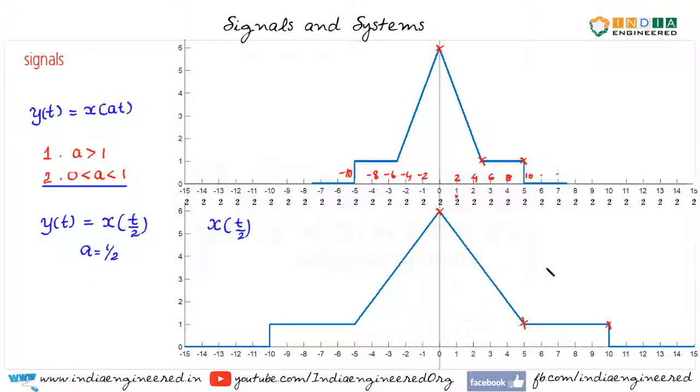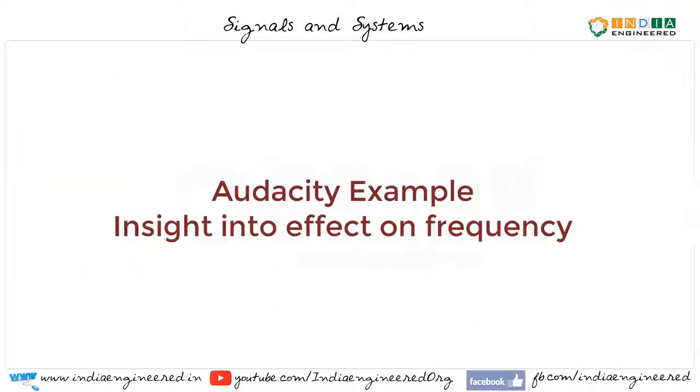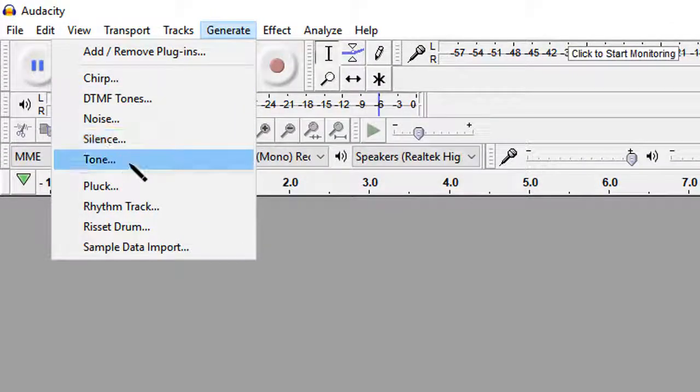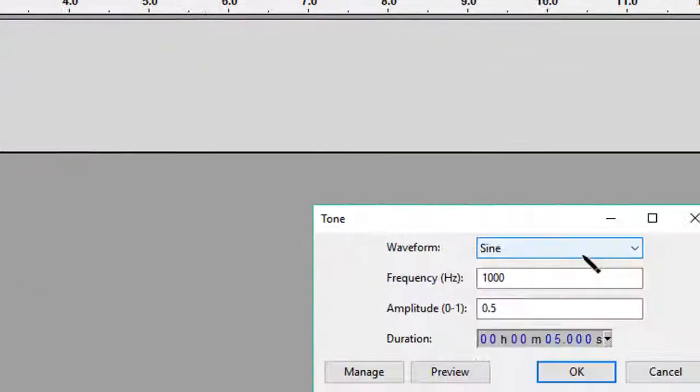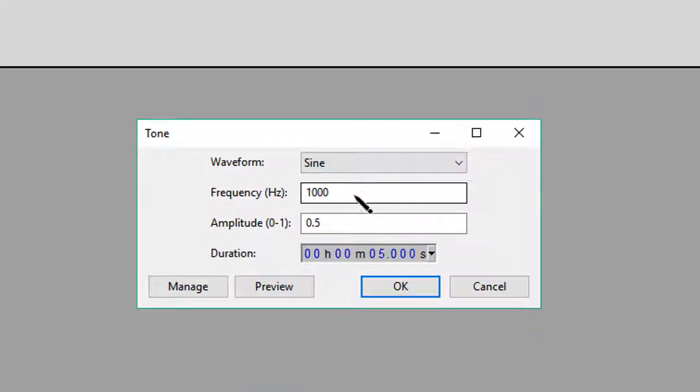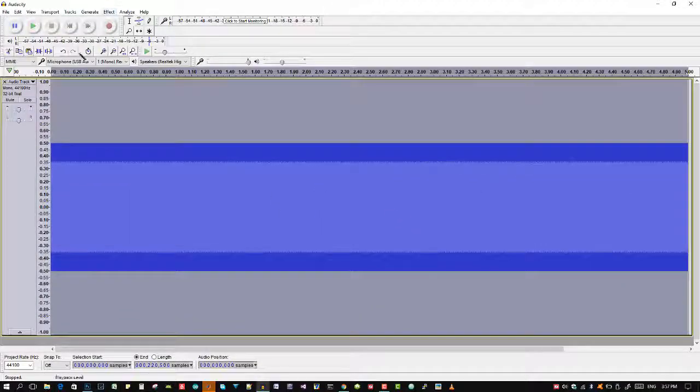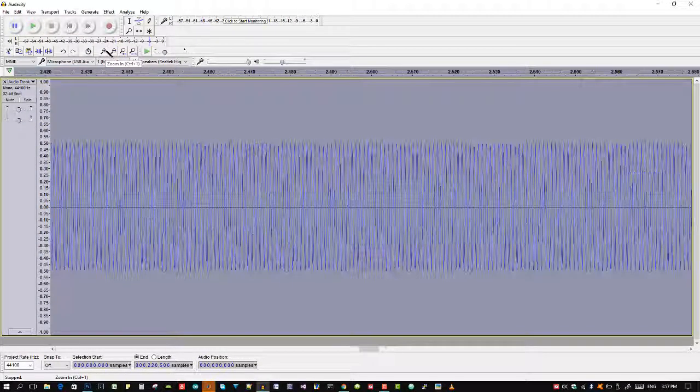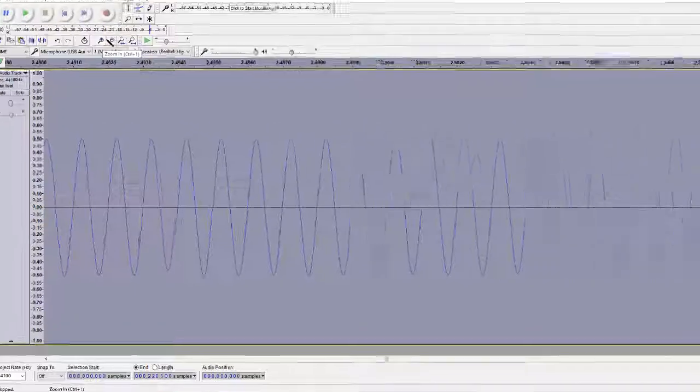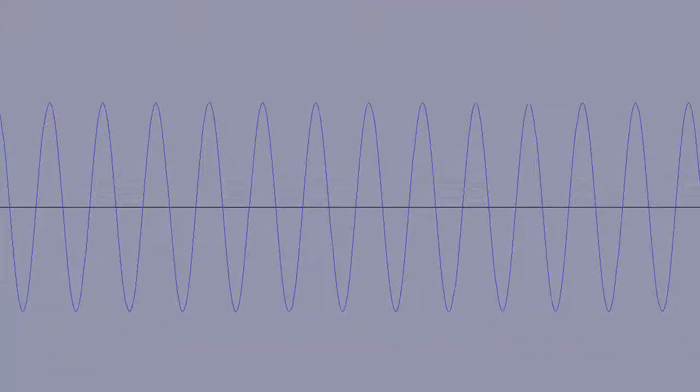Time scaling does affect the frequency component of the signal. We will use Audacity to see an example. First, I will generate a tone. I will select sine wave of frequency 1000 Hz and an amplitude of 0.5. Click OK. Now, you can see the sine wave in timeline. Let me zoom in to show that it's actually a sine wave. Here you can see the sine wave. Let me zoom out.